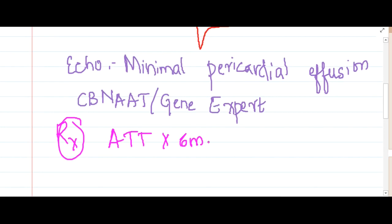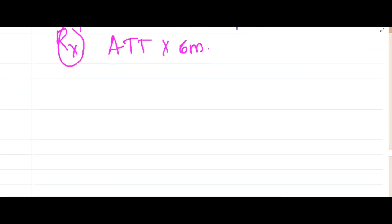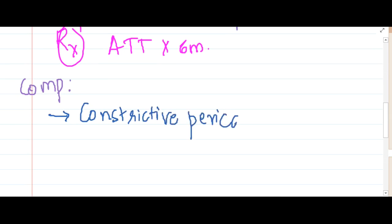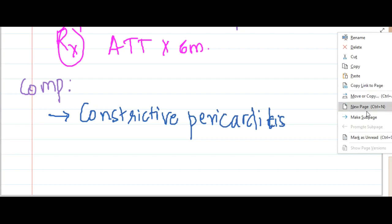This is tuberculosis, so if you see the complications of tuberculosis, this tuberculosis can result in one more disease which is called constrictive pericarditis. This is actually a sequela of tubercular pericarditis. So let us now also learn about constrictive pericarditis.